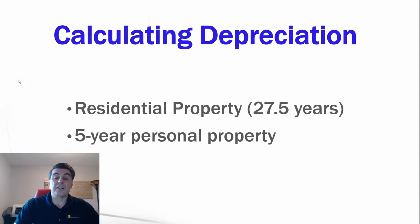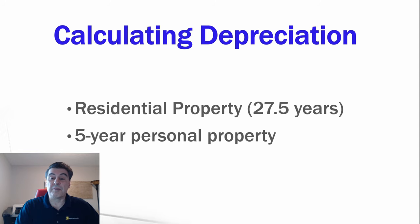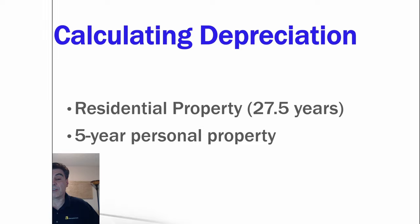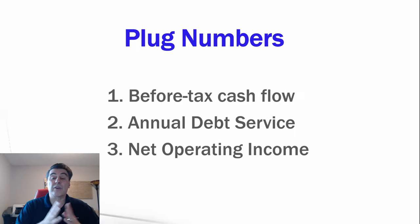Regarding depreciation: residential properties depreciate over 27.5 years. Appliances and other items depreciate at different rates — here we'll use straight-line depreciation over five years for appliances. We'll plug these numbers into a formula to calculate before-tax cash flow, annual debt service, and net income.